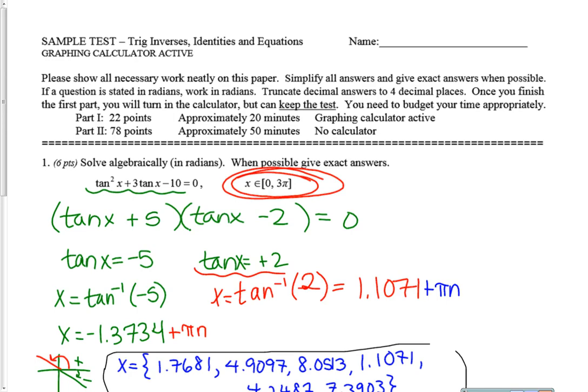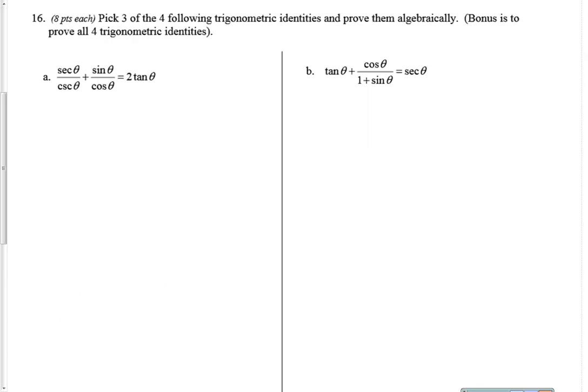This video is finishing up the sample test from functions, trigonometry on inverses, identities, and equations. We're going to be looking at the identities — the last piece of paper on the sample test. We're supposed to verify three of the following four identities for the sample, but let's go ahead and try to get all four done. On your real test, you would be able to skip one if you needed to.